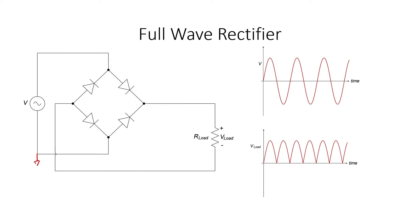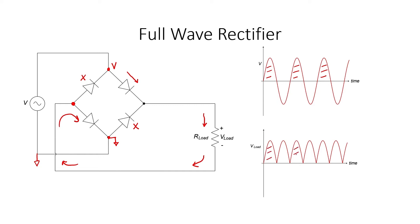Let's label this node as ground. This node is then V. This node is also ground. If the voltage V is higher than ground, then current is going to flow through this diode, through the load resistor, and through this resistor to ground. The voltage at this node is lower than V. Since the voltage here is lower than V, current will not be flowing through this diode. Likewise, the voltage at this node is higher than ground. Since it's higher than ground, current's not going to be flowing through this diode. Current is going to be flowing through the load resistor every half cycle when the voltage V is positive.